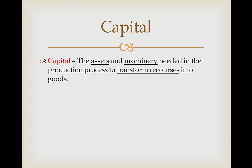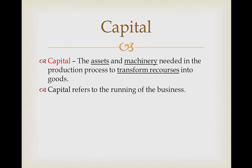First we're going to look at Capital. Capital is the assets and machinery needed in the production process to transform resources into goods. This is the first factor of production because when we're producing a good we're going to need to have the money and the machinery to produce it in the first place. So this pretty much refers to the running of the business — we're going to need to run a business in order to produce a product.